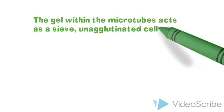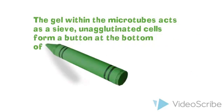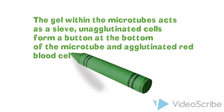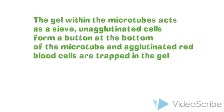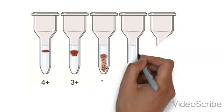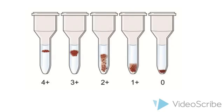Non-agglutinated cells form a button at the bottom of the microtube, while agglutinated red cells are trapped in the gel. 4+ indicates a well-defined band of agglutinated red blood cells in the top part of the gel column. A few agglutinated cells may be visible below the band.